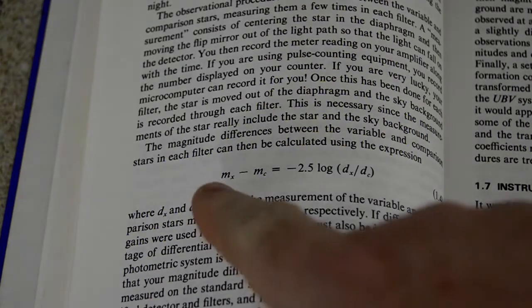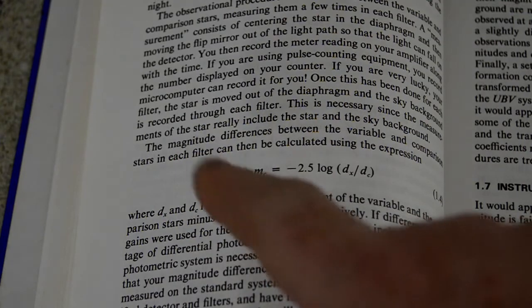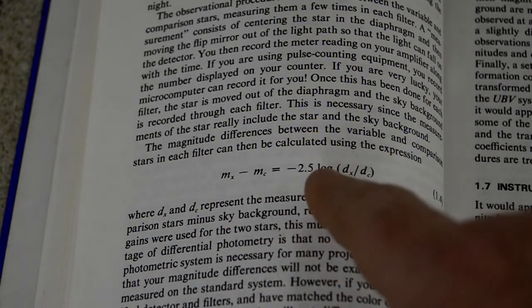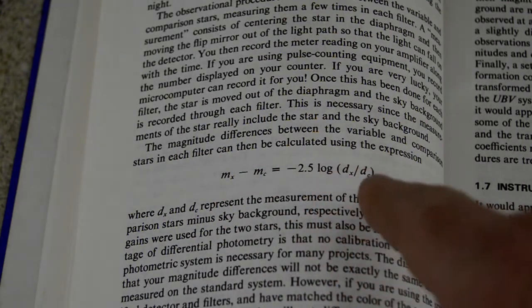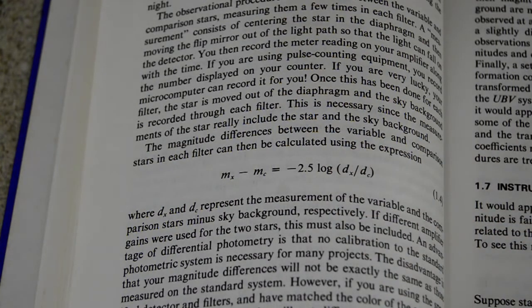Okay, so here you have that basic formula I mentioned. It just shows that the difference in the stars is equal to negative 2.5 times base 10 log of the two measurements ratioed one over the other. It's pretty simple.